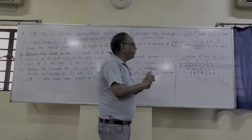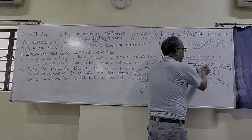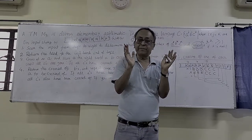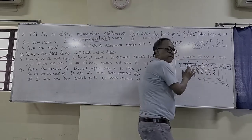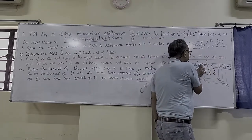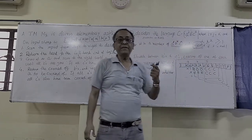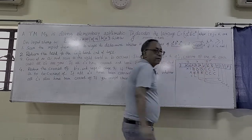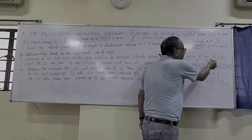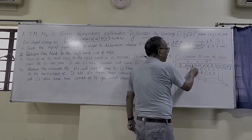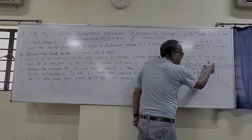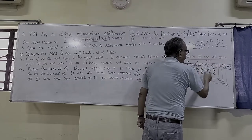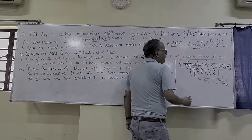The approach is: first, match one A with one B, and for each B, cross one C. If the number of B's are exhausted but C's still remain — or C's run out before B's — the machine rejects. The number of C's must equal the product of A's and B's. So for each A, all B's will cross up the corresponding number of C's. We mark B as capital B to track which B's have been used, then convert them back to small B for the next round.